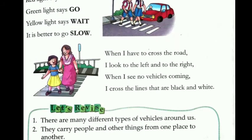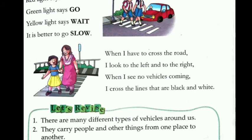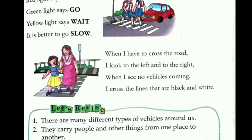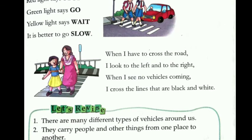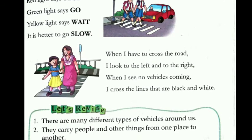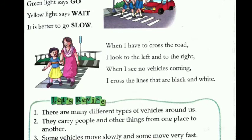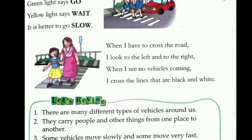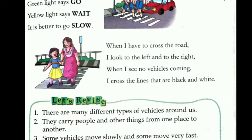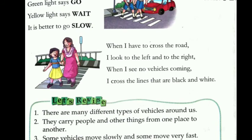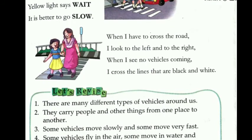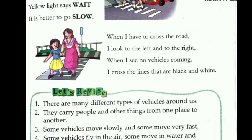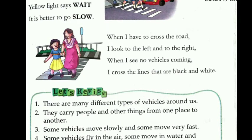It is better to go slow — yani ke zyada tez gaadi bilkul na chalayein. When I have to cross the road, I look to the left and to the right — yani ke pehle main left dekhta hoon, phir right dekhta hoon, aur check karte hain ki koi vehicle to nahin aa rahi. I cross on the lines that are black and white — yani ke zebra crossing pe jo lines black and white color ki hoti hain, main us pe hi road cross karta hoon.